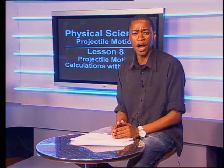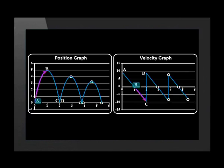Let's start at the beginning of each graph and describe the motion bit by bit. The ball leaves the ground at a velocity of 10 meters per second upward. It moves upward at a decreasing velocity. The ball reaches zero velocity and maximum height, which is approximately five meters, after one second. The ball then moves downward, its velocity increases as time passes to a maximum velocity of 10 meters per second downward after another second.